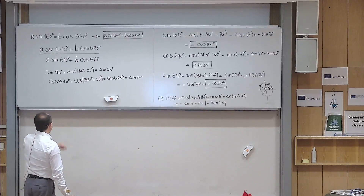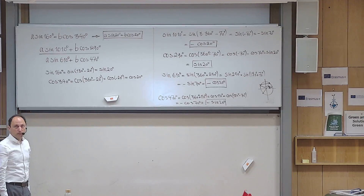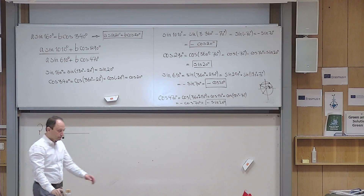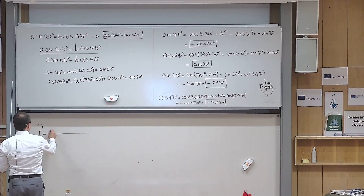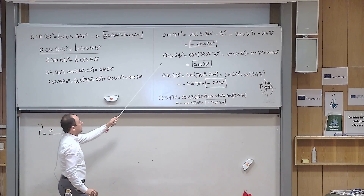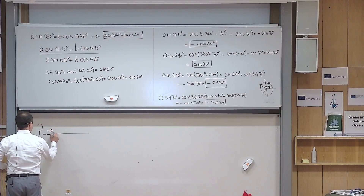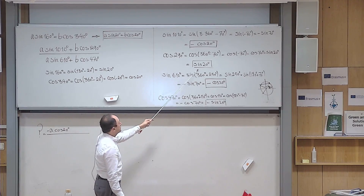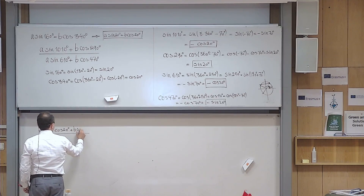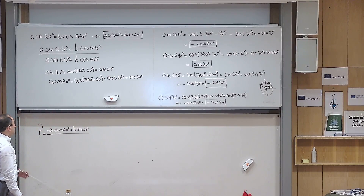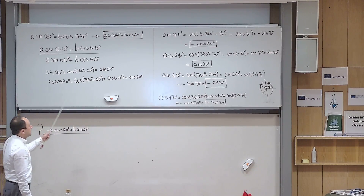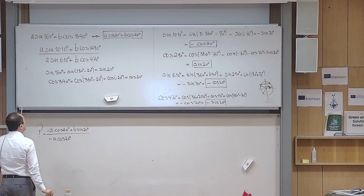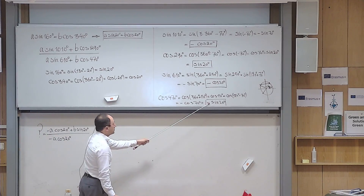Now I will rewrite the fraction with everything expressed as trigonometric functions of only 20 degrees. The numerator: A times sine of 1010° becomes A times minus cosine of 20°, so I write minus A cosine of 20°; plus B times cosine of 290° becomes plus B sine of 20°. The denominator: A times sine of 610° becomes minus A cosine of 20°; plus B times cosine of 470° becomes minus B sine of 20°.